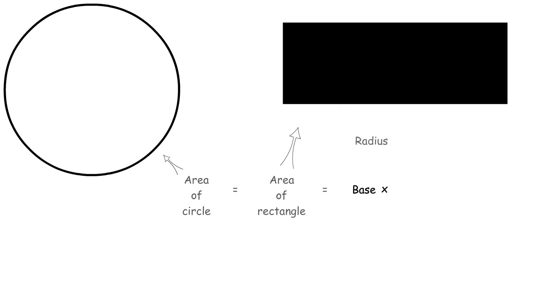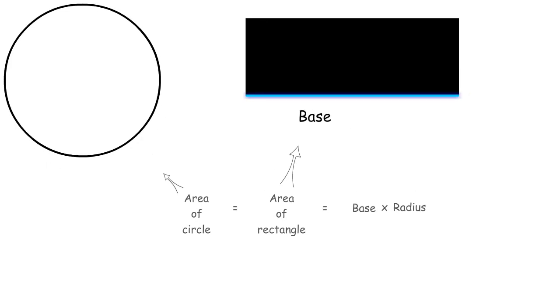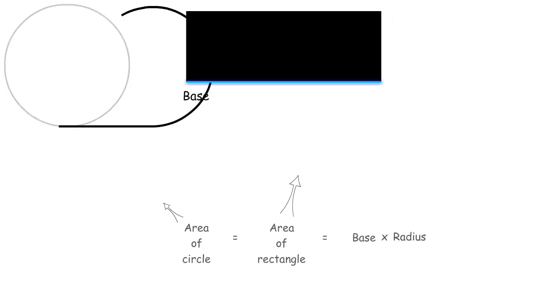To find the base, we need to look at the circumference of the circle. And when we compare the base and the circumference, we can see that the base is equal to one half the circumference.